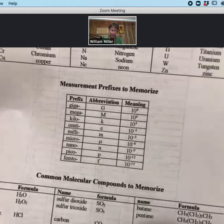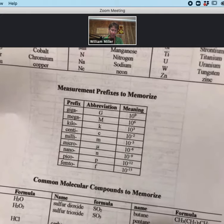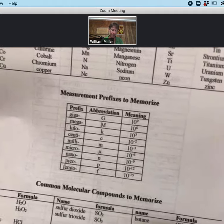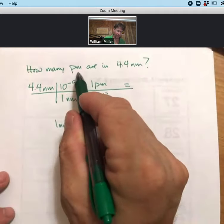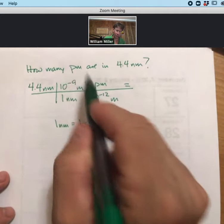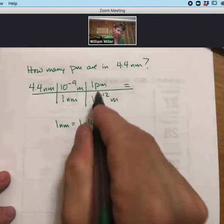Likewise, if you look at this handout, you can see that a picometer, P, is 10 to the minus 12. And so a picometer is 10 to the minus 12 meters. So that's where we get that conversion.